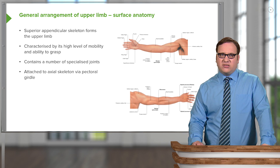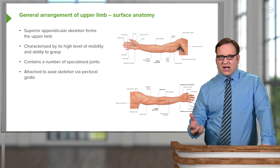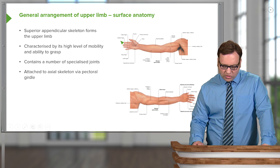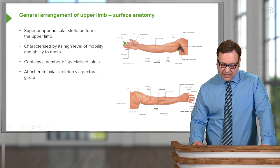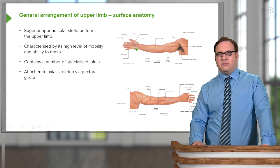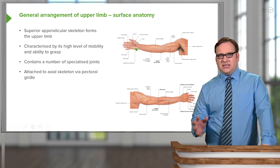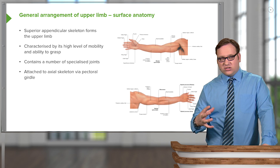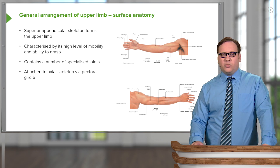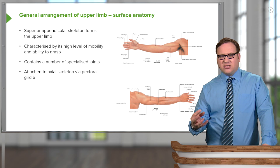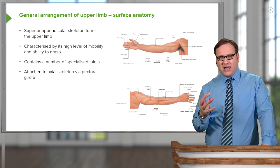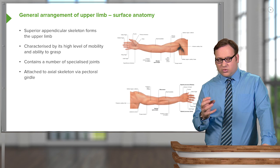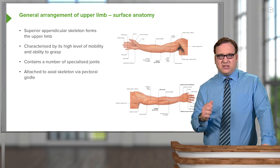It's also characterized by its ability to grasp structures. The hand is a really important structure at the distal end of the upper limb, and its ability to manipulate the fingers — to hold, to grasp structures. So when you're holding a pencil to write, it's a complex arrangement of movements that allow your fingers to assume this position.